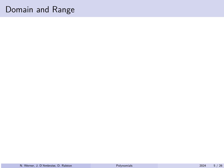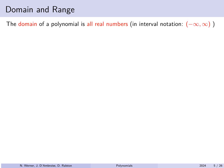Let's talk about the domain and range of polynomials. A polynomial involves x raised to various positive powers multiplied by numbers with no division or other restrictions, so the domain of a polynomial is always all real numbers — written as the interval (−∞, ∞).